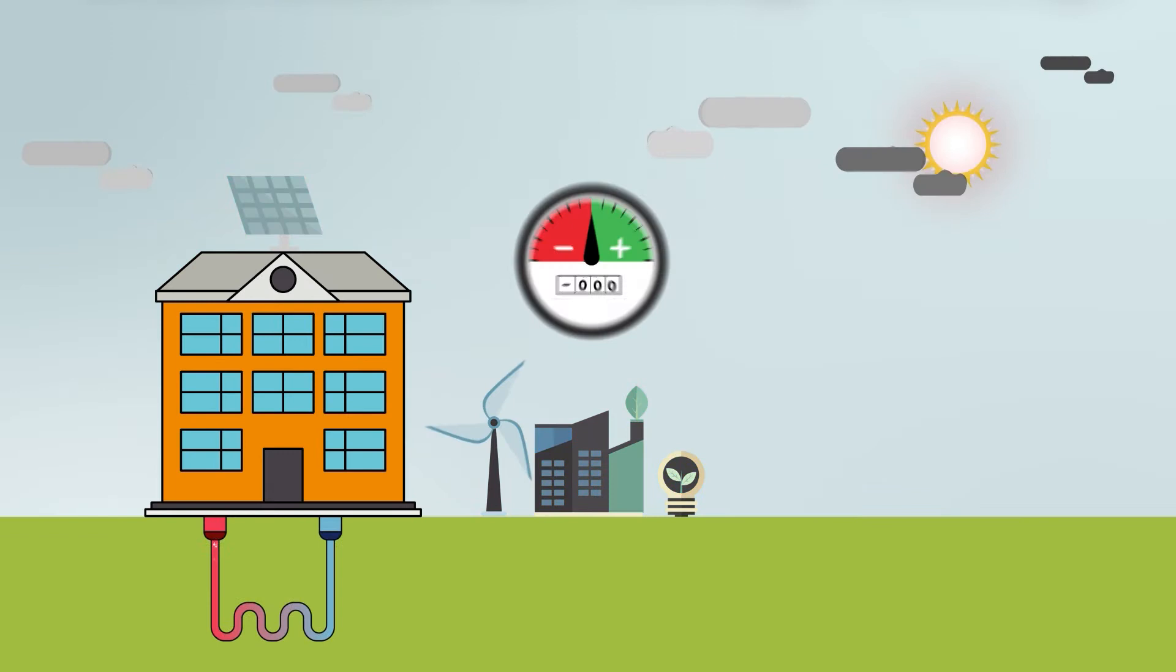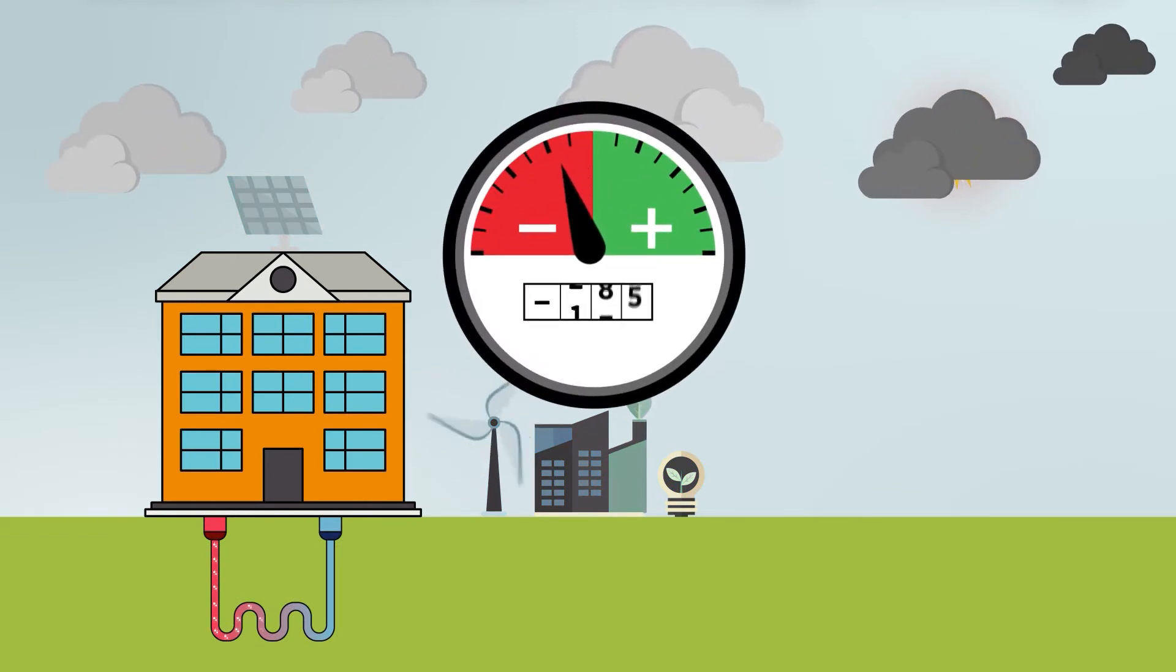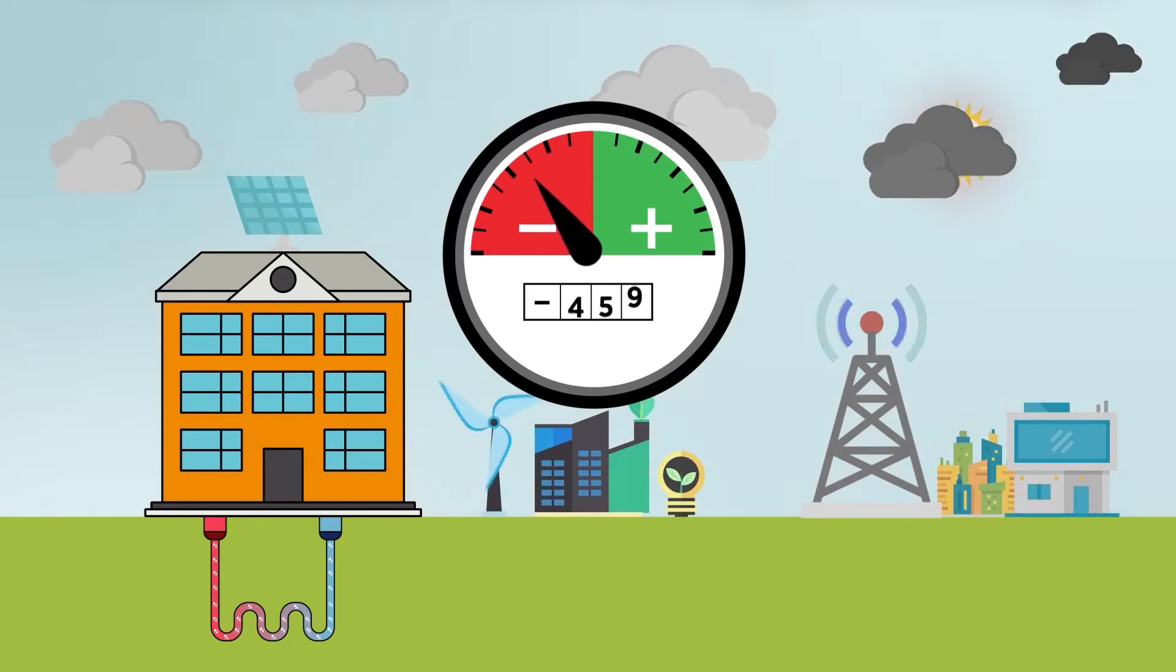When conditions are not suitable for energy generation, the building will use energy from the grid to meet its needs. When conditions get better, the renewable energy systems will cover the building's energy need and send excess energy back into the grid to make up the balance.